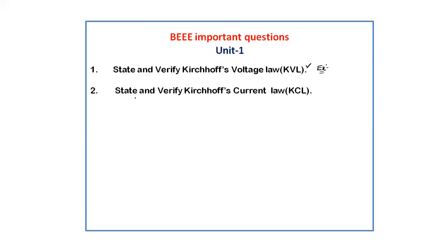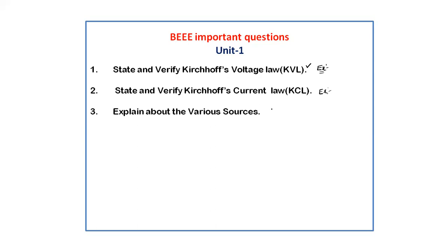The second question is: state and verify Kirchhoff's current law (KCL). State what KCL is, draw the diagram, take one small example problem, and verify it. Next, explain about the various sources — what is a dependent source, what is an independent source, what are ideal sources and practical sources.